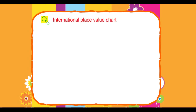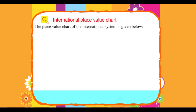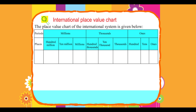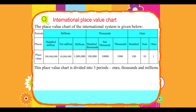International Place Value Chart. The place value chart of the international system is given below. This place value chart is divided into three periods.